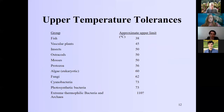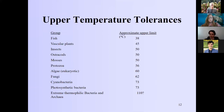In hot springs, fish are the first to drop out, then vascular plants drop out pretty early, then insects and crustaceans can persist. Fungi do pretty well; the upper temperature limit for cyanobacterial photosynthesis appears to be 73°C. Then there are extreme thermophilic bacteria and archaea — it's not entirely clear where the upper limit is, but once water boils they can't survive.